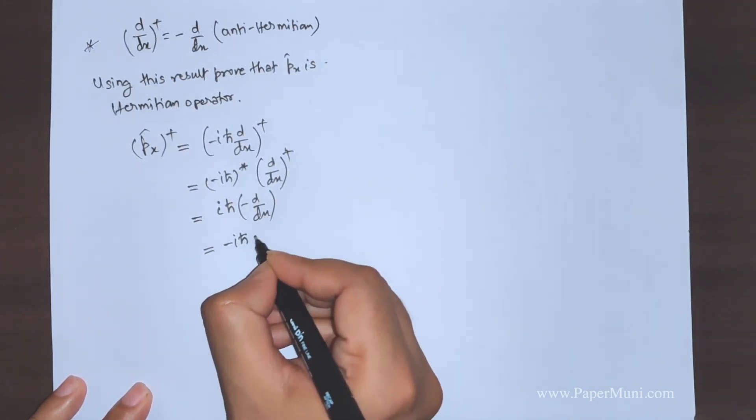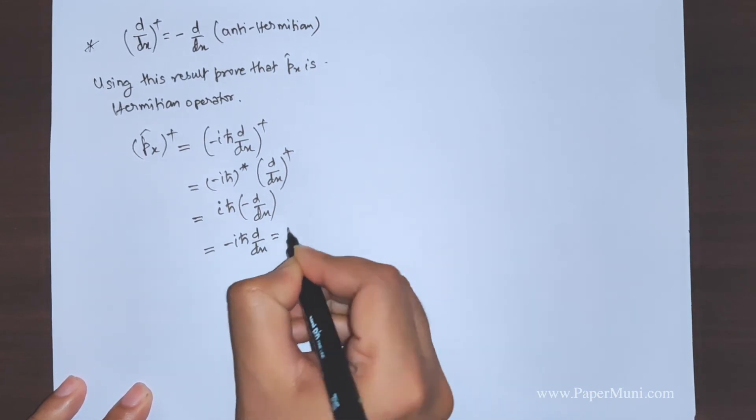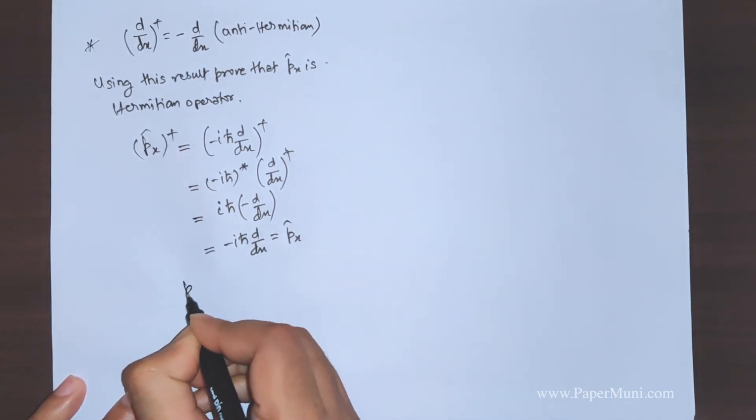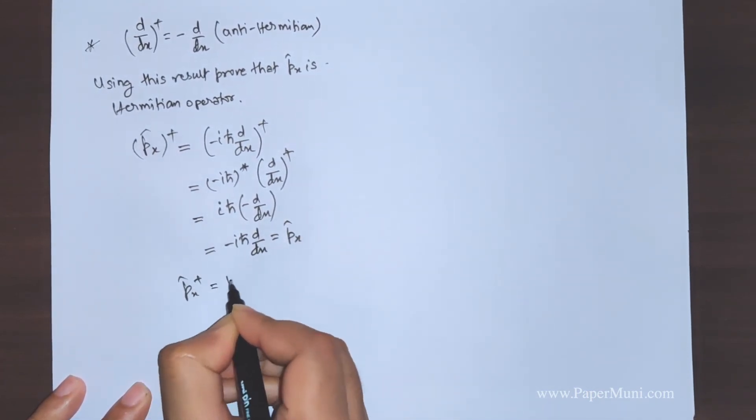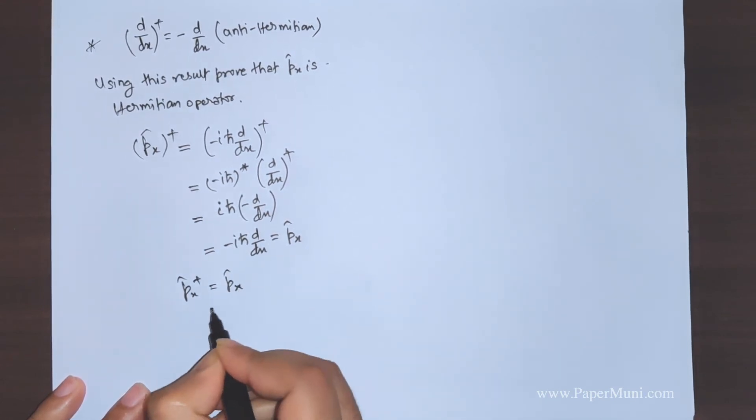Now we get minus ih cut d by dx, which is again the px operator, that means px dagger is equal to px. This proves that px is hermitian, hence proved. So this is a small exercise.